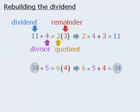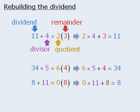Let's try one more. Since 8 divided by 11 equals 0 with remainder 8, it must also be true that 0 times 11 plus 8 is equal to 8.